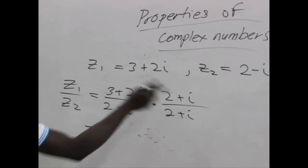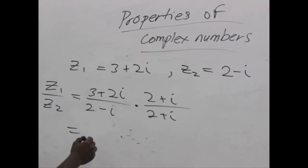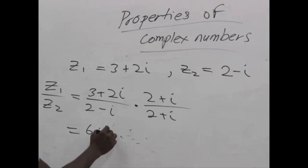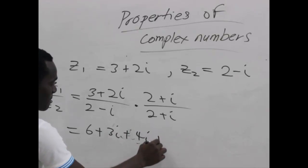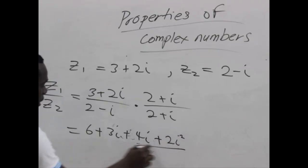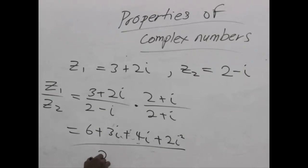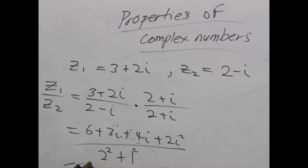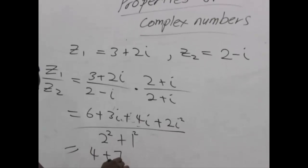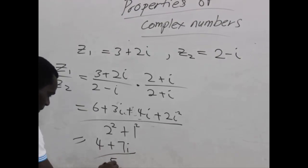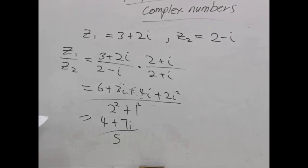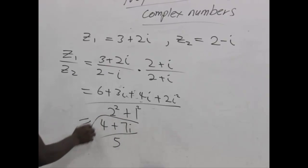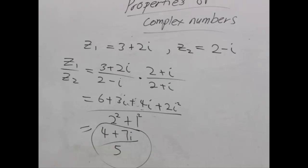We expand and simplify. Expanding, we get 6 plus 3i plus 4i plus 2i squared, all over 2 squared plus 1 squared, which simplifies to 4 plus 7i all over 5. So this is our final answer for dividing z1 by z2.